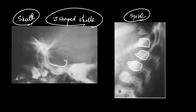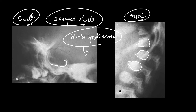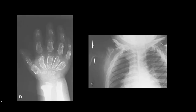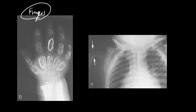This inferior beaking of the vertebra and J-shaped sella are characteristic features of Hurler syndrome. Write in the comment section what other clinical features are seen in Hurler syndrome. If you look at the fingers of these patients, the fingers are short and tubular, and the ribs have a spatulated appearance — meaning the ribs are widened.